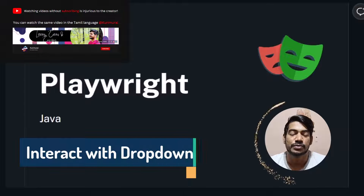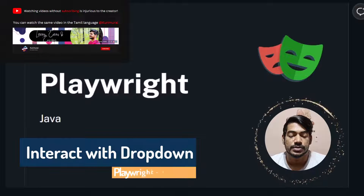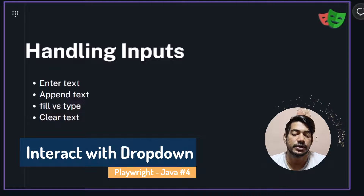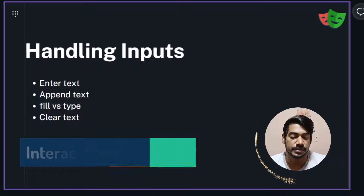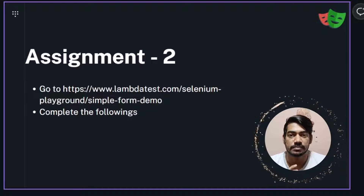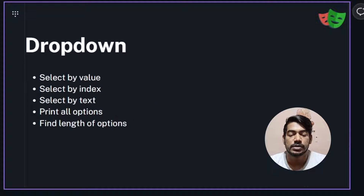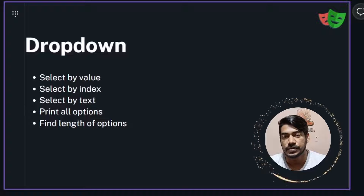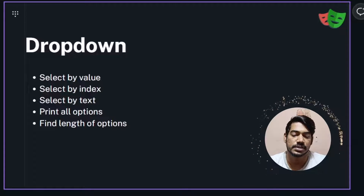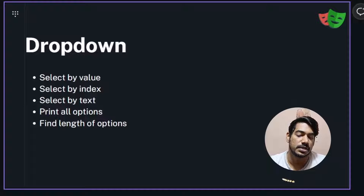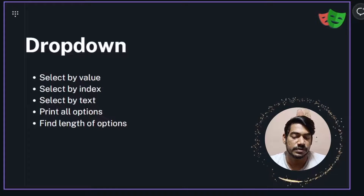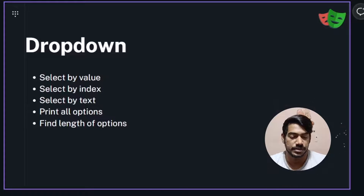Hey guys, my name is Kaushik and welcome back to LeetCode. In our previous video we learned how to handle different types of input fields using Playwright, and I gave you an assignment — I hope you have completed that. Today we are going to learn how to handle different types of dropdowns using Playwright. There are quite a few methods like select by value, index, and text, and we can print all the options and even find the length of the options.